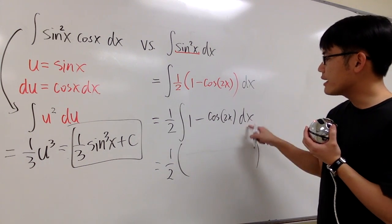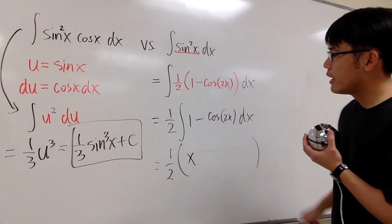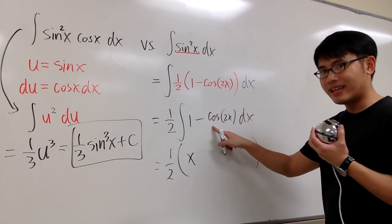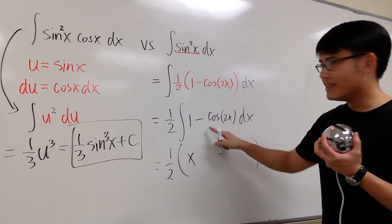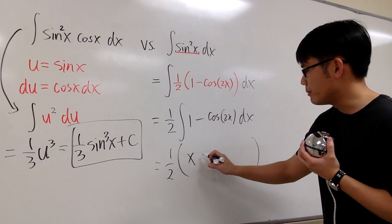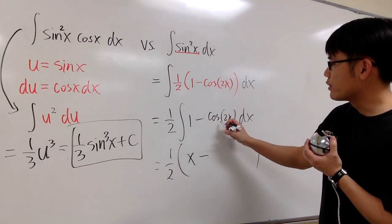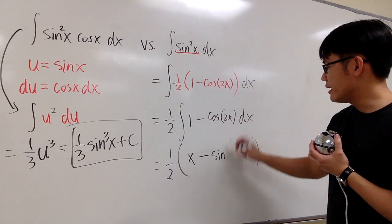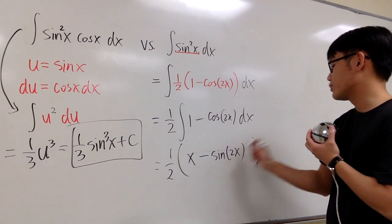The integral of 1 in the x world is just x. And the integral of cosine is sine. So we maintain the same sine right here. So we have minus. The derivative of cosine is sine. And then the input will be the same. The integral will be the same. So it's 2x.